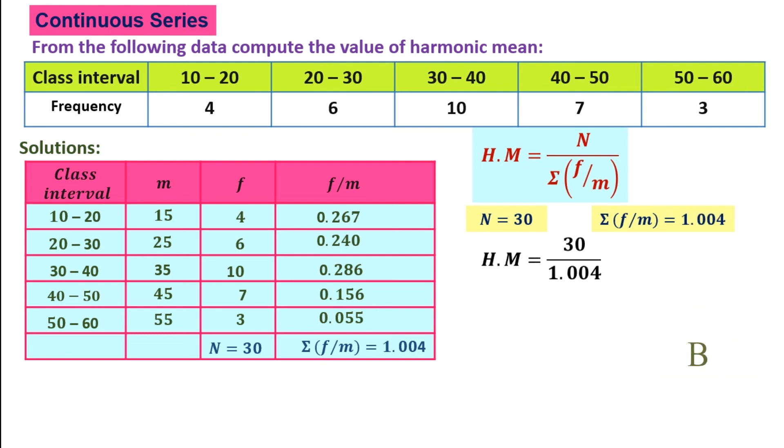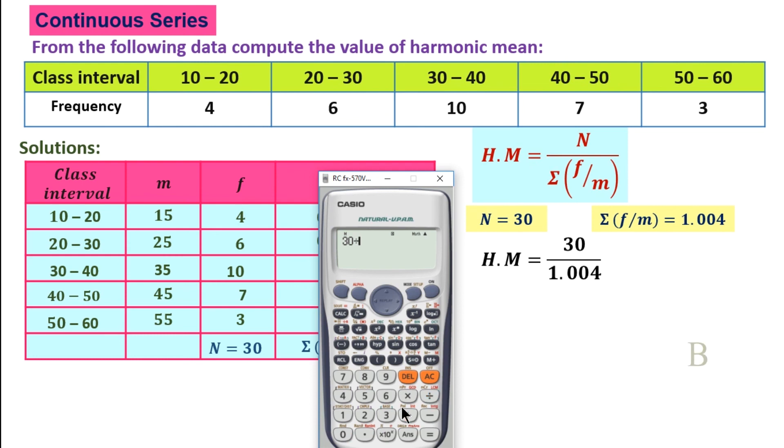N is equal to 30, sigma of F divided by M is equal to 1.004. H.M is equal to N - substitute the value - 30 divided by 1.004, so 29.88.